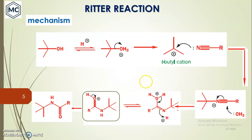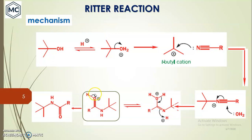Next, water gets added to this electrophilic carbon and forms a hydronium intermediate. This hydronium then gets deprotonated, losing H+. The compound tautomerizes, and the unstable oxonium gets deprotonated to form the alkylamide.